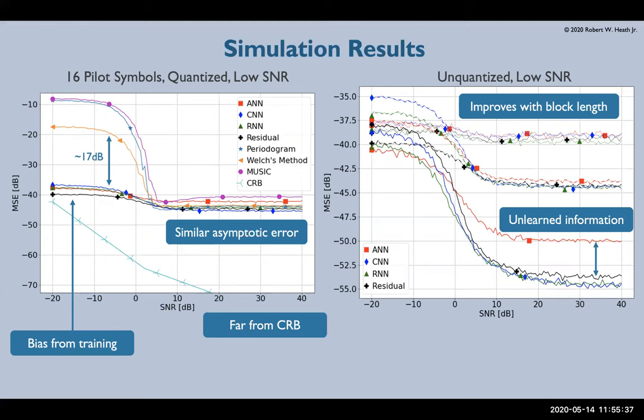we can see that our estimators have more than 17 dB improvement, near like minus 5 dB SNR, over the traditional methods, but still approach a pretty similar asymptotic error. Also, traditional estimators actually start degrading in performance above about 10 dB or so, while our networks do not show that.